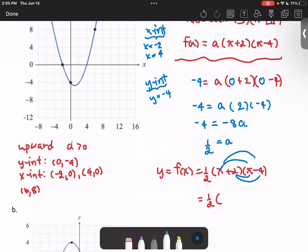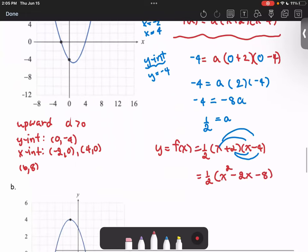It will give us x² - 2x - 8, and we write it to be the function f(x) = 1/2x² - x - 4.